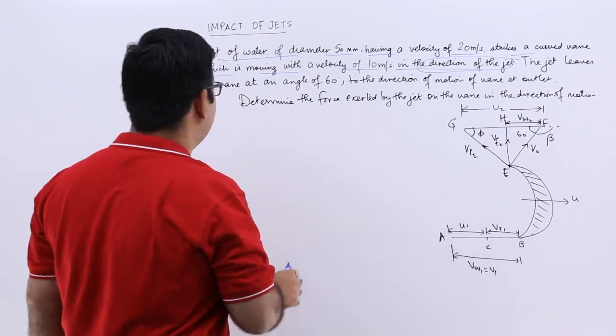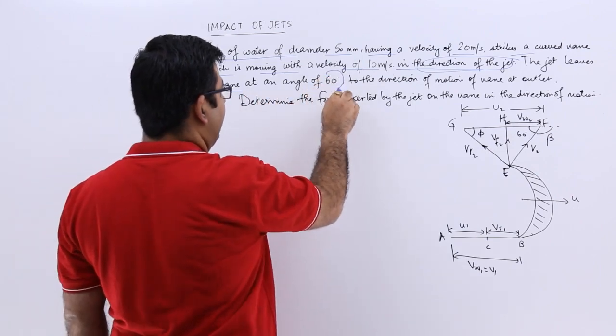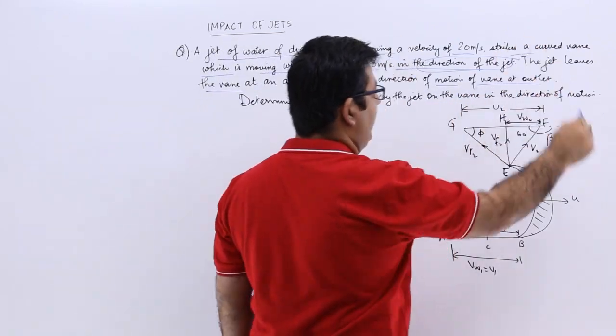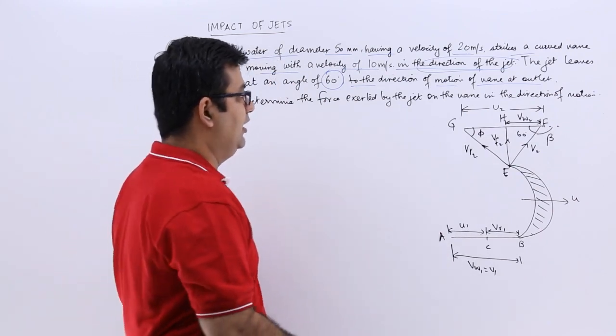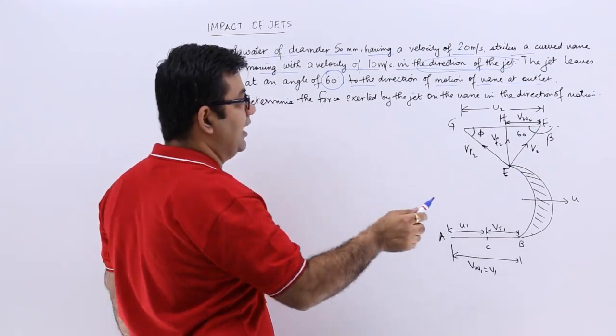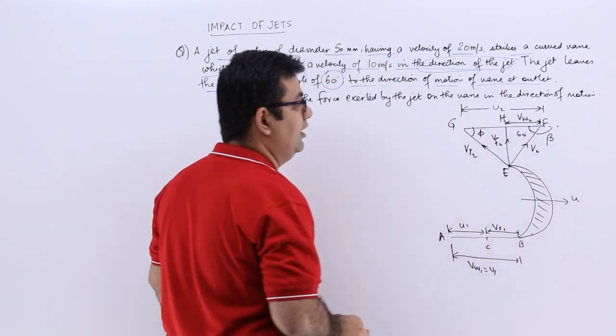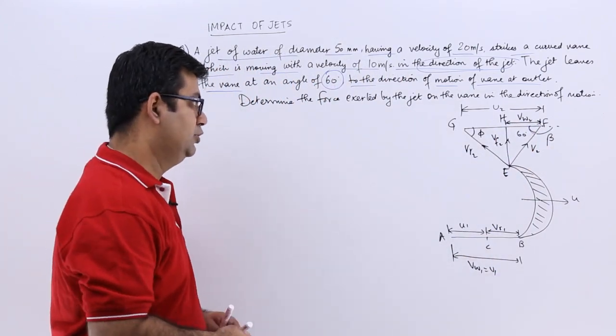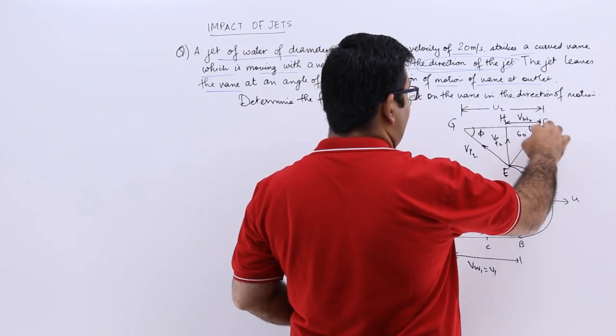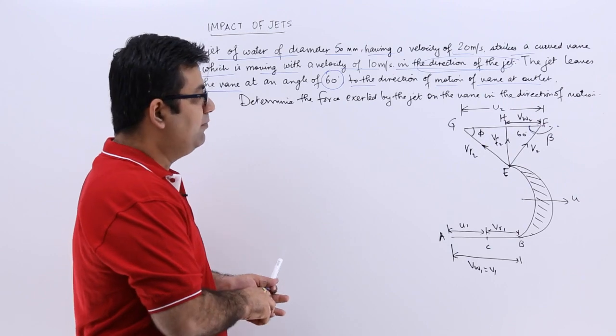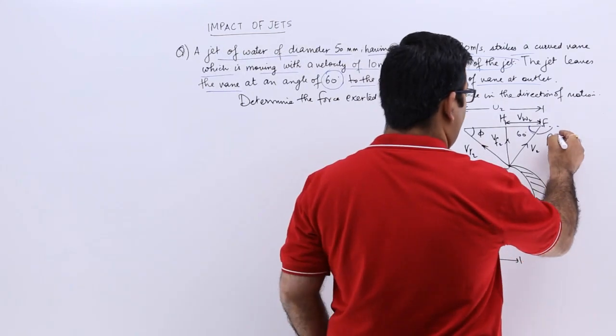So the jet leaves the vane at an angle of 60 degrees to the direction of motion of vane outlet. So the jet is leaving at an angle of 60 degrees like this and this is the angle which it makes with the direction of the motion of vane. So this angle would be your beta, that is the outlet angle. So beta would be 180 minus 60 which is 120.